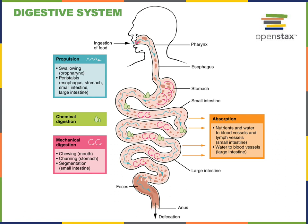Water-soluble nutrients will be directly absorbed into the blood. But lipids — fat-soluble nutrients — are absorbed in large droplets which cannot fit into the blood capillaries in the wall of the intestine, and will instead be absorbed by lymphatic vessels known as lacteals. They will then be carried in the lymphatic system until eventually being drained into the blood at the large subclavian vein.